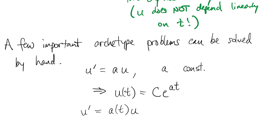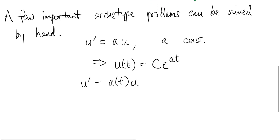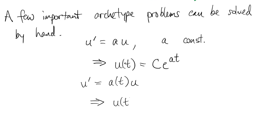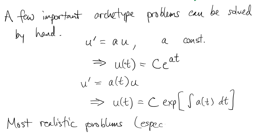One step up from this is what we call a variable coefficient problem. This is also solved by an exponential, provided that you can find an anti-derivative of the coefficient function. There are some more solvable problems, including nonlinear ones, but most realistic problems, especially systems of two or more equations, require computational support.